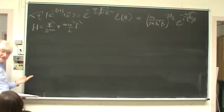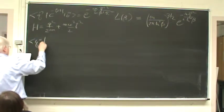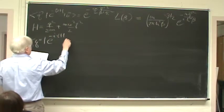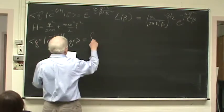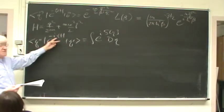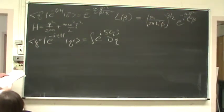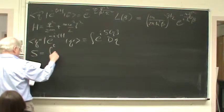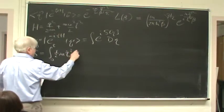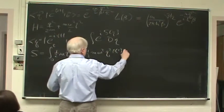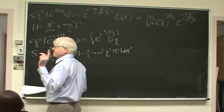The Hamiltonian is H = p²/(2m) + (m ω² q²)/2. Now, in real time, we have ⟨q''|e^{−iHt}|⟩, setting ℏ = 1 temporarily. This is a path integral e^{iS[q]} Dq, integrating over all paths from q' to q'' in time t. The action is S = ∫₀ᵗ [(½m q̇²(t') − ½m ω² q²(t')] dt'.